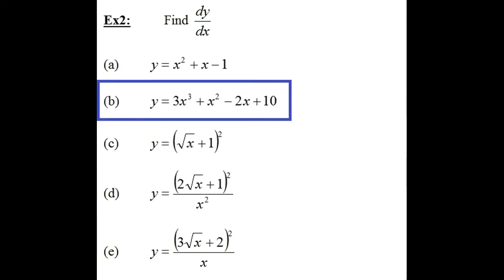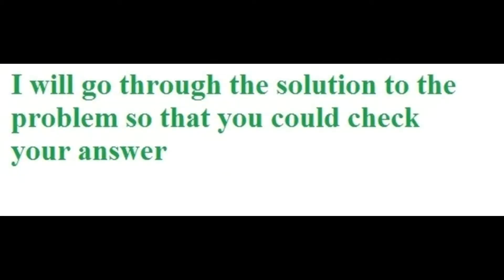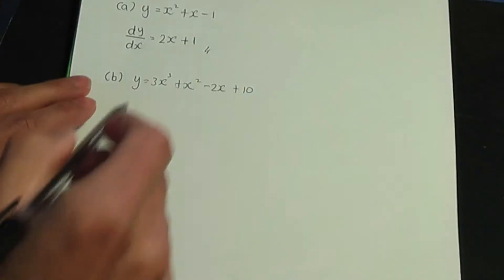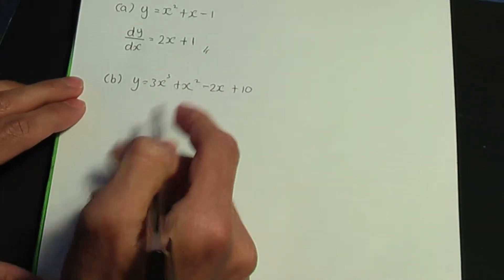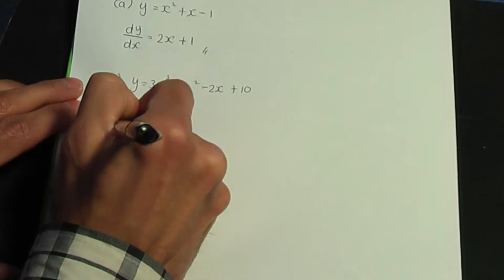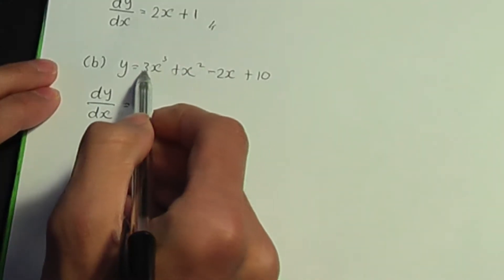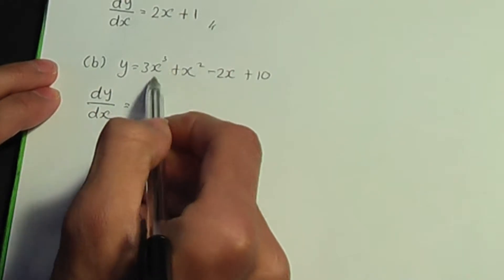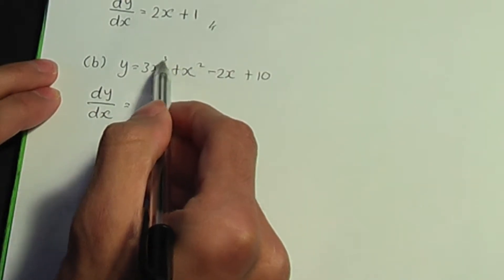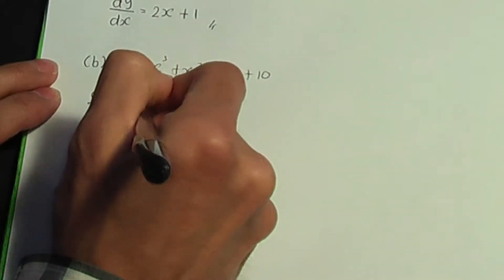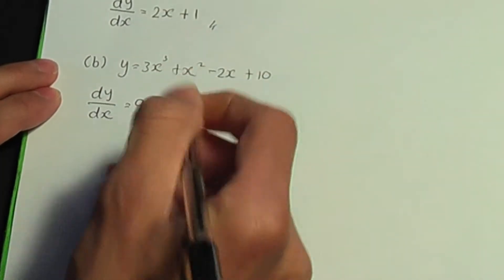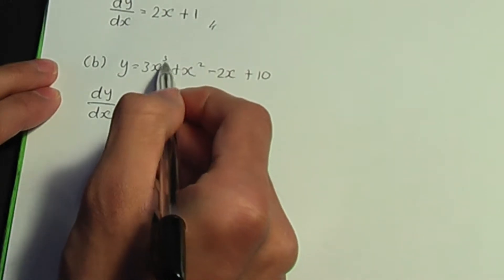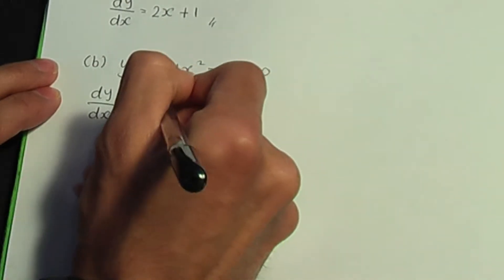Part B: we need to differentiate y is equal to 3x cubed plus x squared minus 2x plus 10. So let's work out dy by dx. For the first term, 3x cubed — remember the process: multiply by the power, 3 times 3 gives us 9, so it's 9x so far. Then subtract 1 from the power: 3 minus 1 is 2, giving 9x squared.